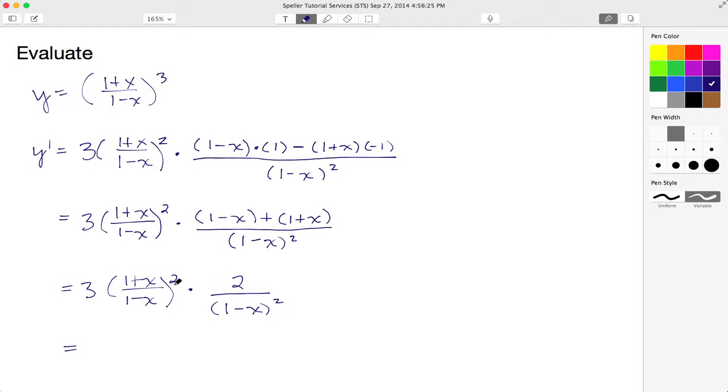And now I can do another step of simplification: the 2 times the 3 to give me a 6 out front here. And then I have the 1 plus x as my numerator, and then the 1 minus x is my denominator that's squared, times 1 over 1 minus x and that quantity squared.